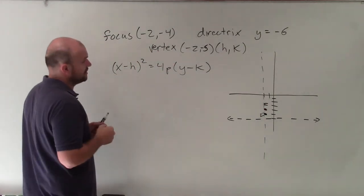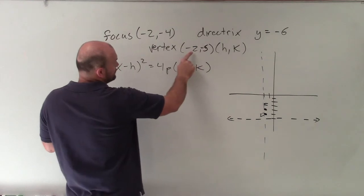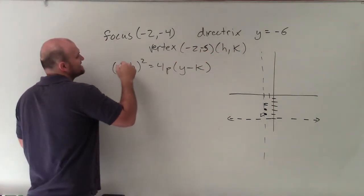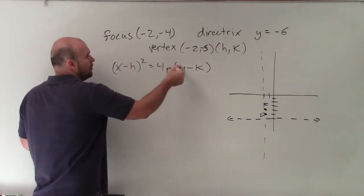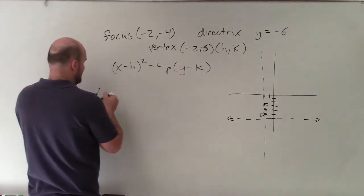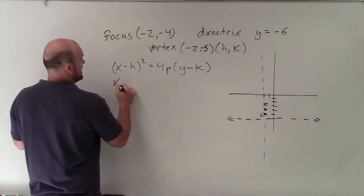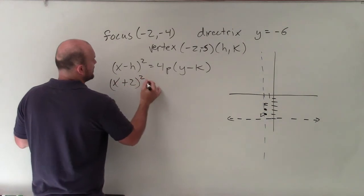So now I'm just going to plug in my information. I could say that h is equal to negative 2, k is equal to negative 5. So it's x opposite of negative 2, y opposite of negative 5. So my equation would be x plus 2 squared equals 4.